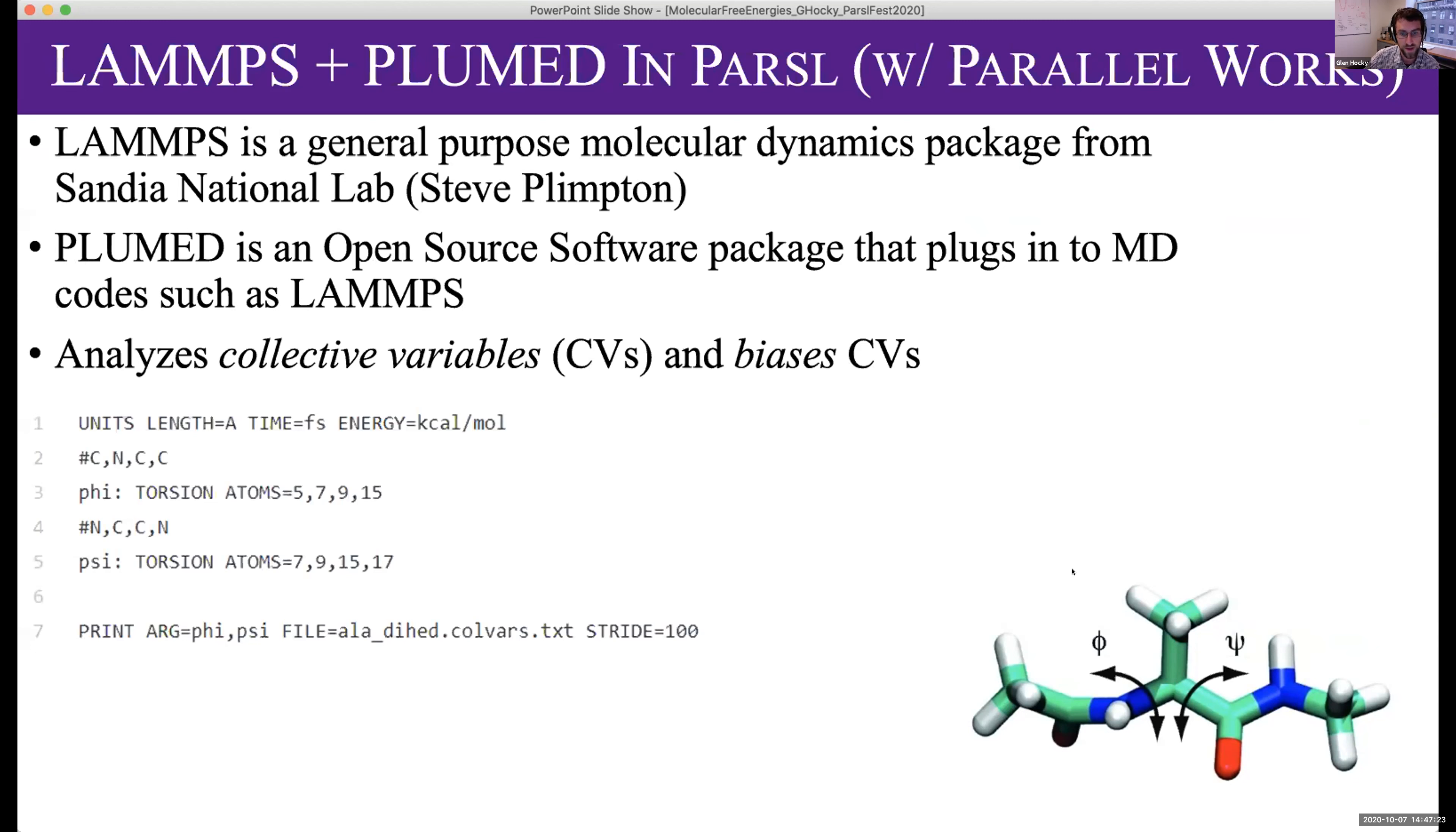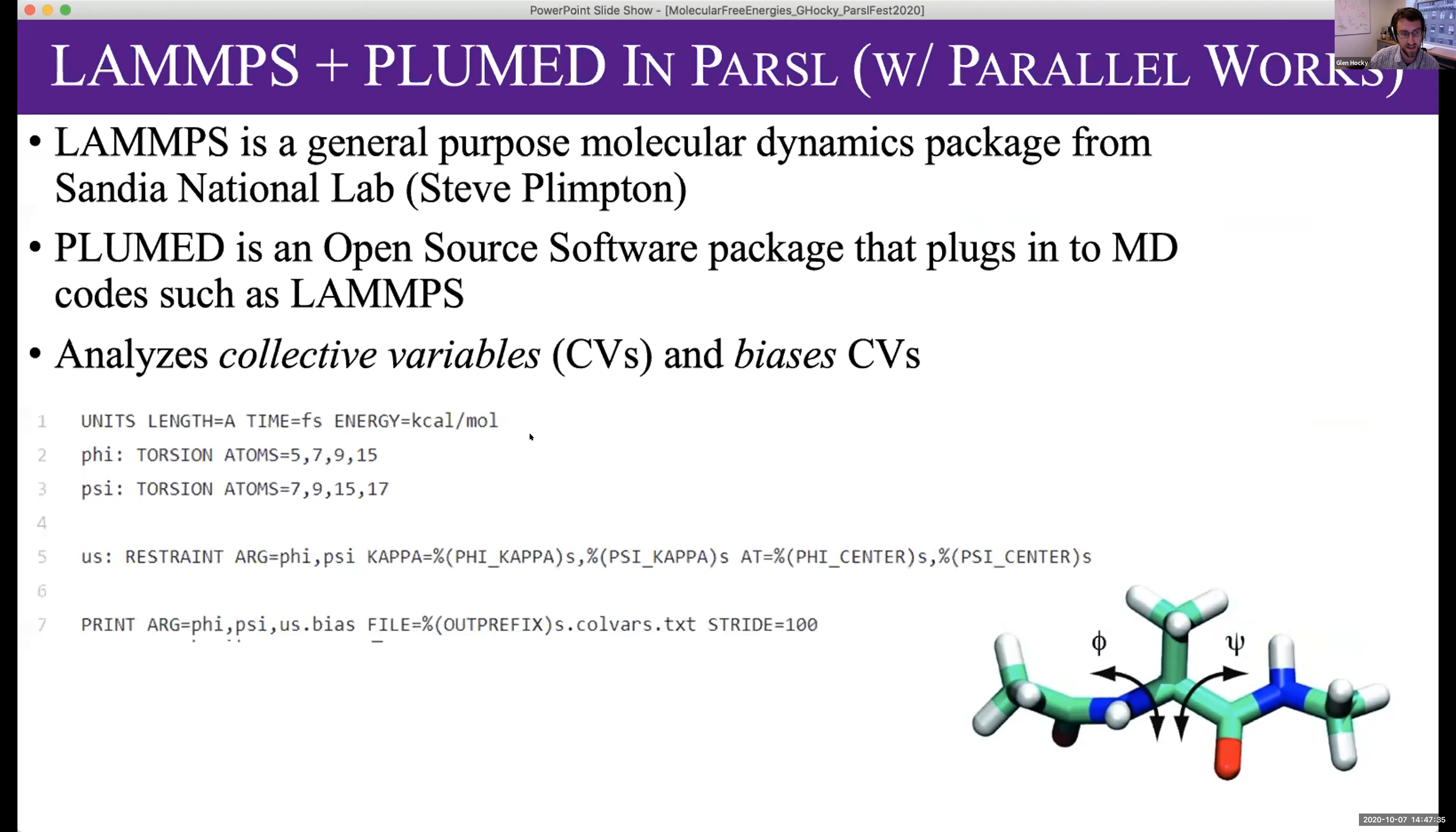With Plumed, we can analyze molecular structures. For example, we can calculate these angles, define them as phi and psi, and print them out from our simulation. If we want to force them to do something, there are various things like applying a bias on a particular position of these angles by just adding one line here.